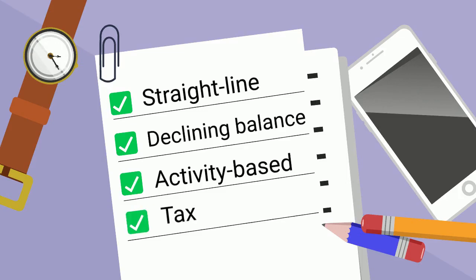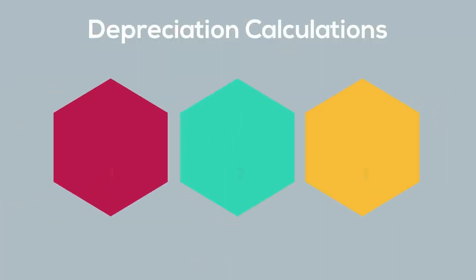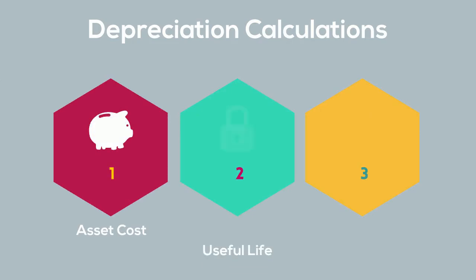Tax depreciation is the method used for tax reporting purposes. To calculate depreciation, we need to know three amounts: the cost of the asset, the useful life of the asset, and the salvage value of the asset. We've discussed what's included in the cost of assets.